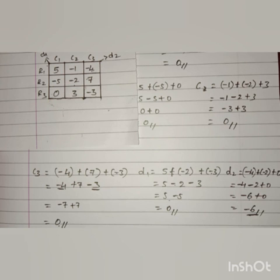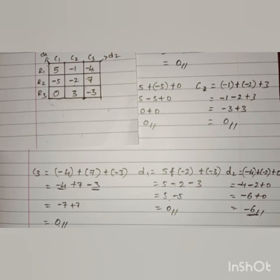Now let us find out the second magic square — whether it is a magic square or not. Let us find out the sum of all the rows, columns, and diagonals in the second magic square.